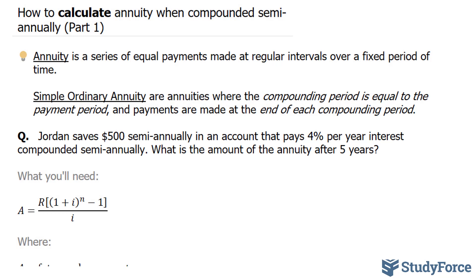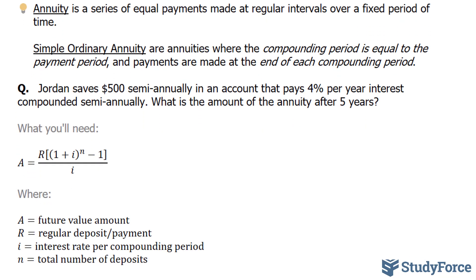What you'll need is the following. You'll need this formula, and this formula tells us that the future value amount, represented as A, is equal to R times (1 plus i) to the power of N minus 1, divided by i, where N represents the total number of deposits, and i represents the interest rate per compounding period.